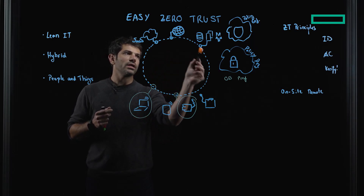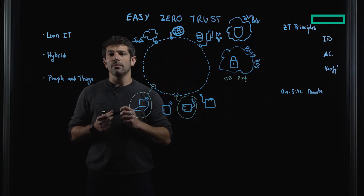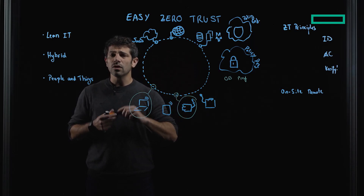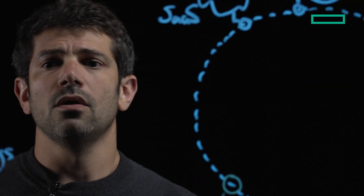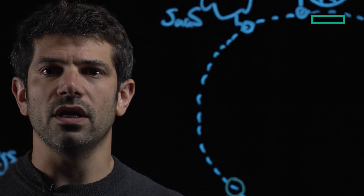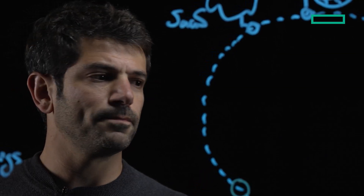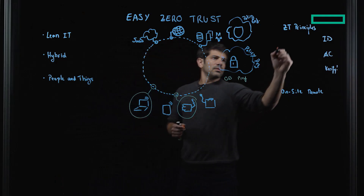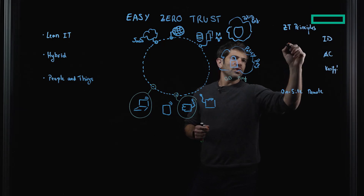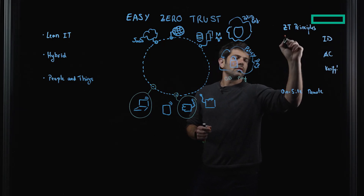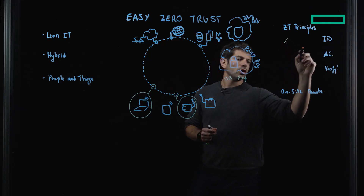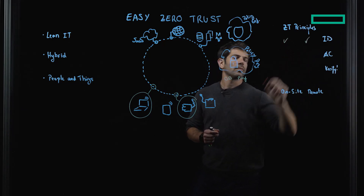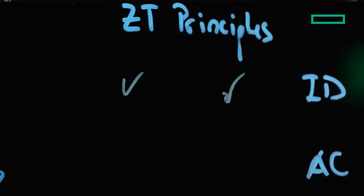Next, how are we going to control access to the application? This is pretty straightforward — we generally will integrate with an identity provider. With CloudAuth and SSO, we have identity covered.